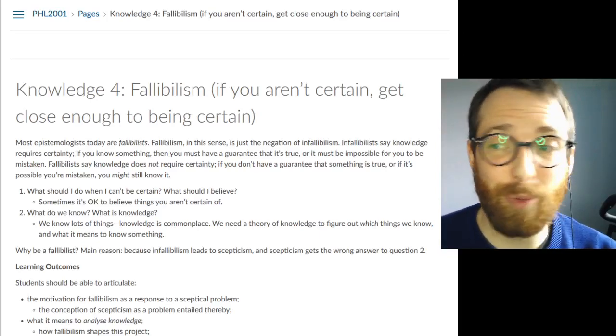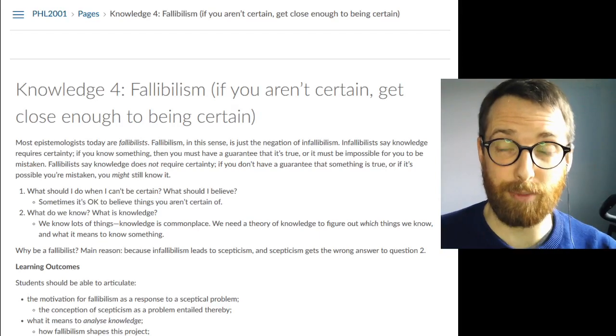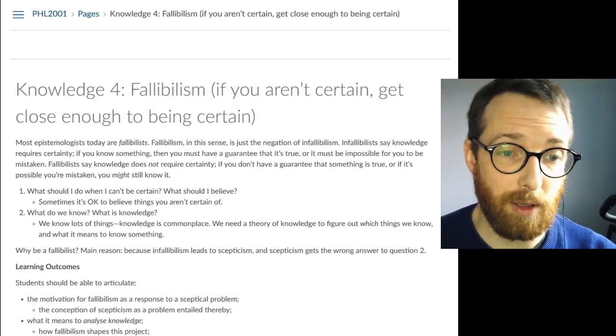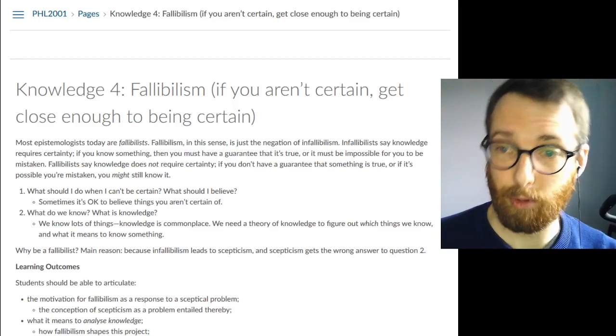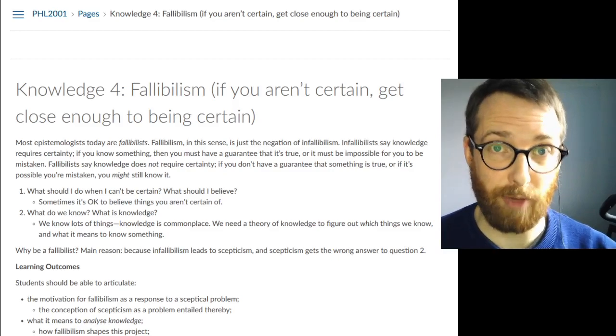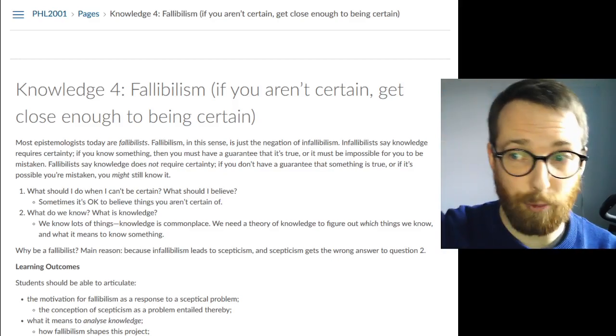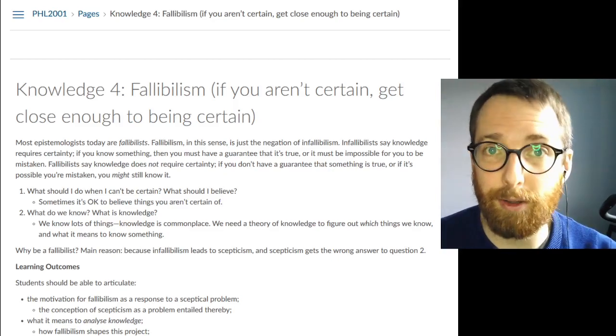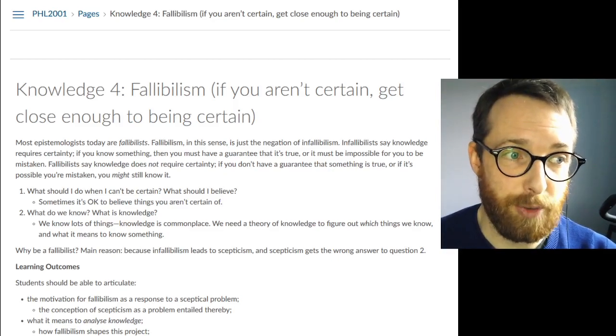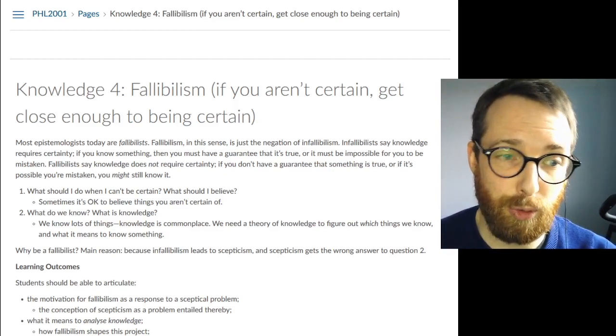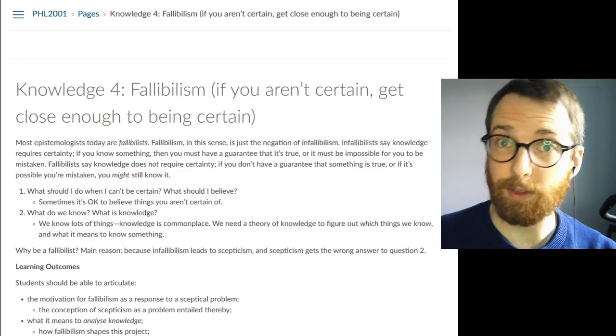Hi guys, so this week we are talking about fallibilism. This is the third and final major answer we're looking at to the problem of uncertainty. We had infallibilists who say knowledge requires certainty. To know something you must have a guarantee that it's true and you should only believe the things that you can be sure of.